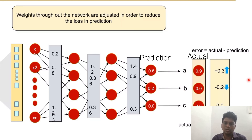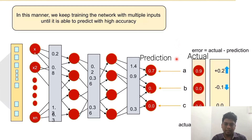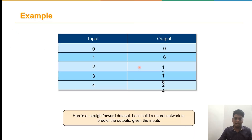We still need to increase the probability for A by 0.3 and decrease B by −0.2; C is already 0, so no adjustment is needed there. Again using backpropagation, we update the weights. After this update we get 0.7, 0.1, and 0. After one more update we reach 0.9, 0.1, and 0.